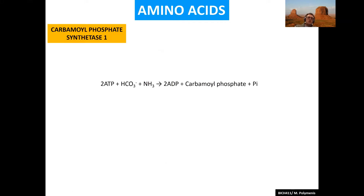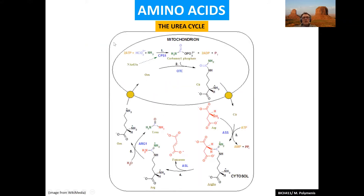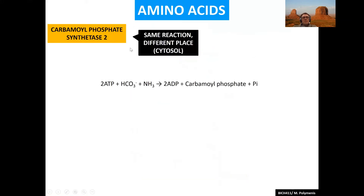Back to the first reaction: carbamoyl phosphate synthetase. We've seen this in the urea cycle. We discussed the mechanism at the time, so we won't repeat it. But remember, that reaction was happening in the mitochondria. The one we're talking about now is the same reaction, but it happens in the cytoplasm — it's just a different version of the enzyme that essentially does the same thing, generating carbamoyl phosphate in the cytoplasm.